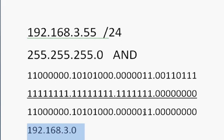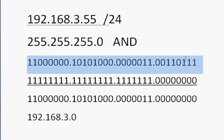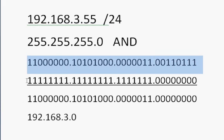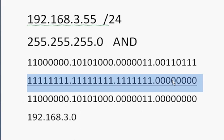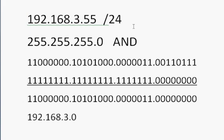In Cisco CCNA, what happens is the router takes the IP address and logically ANDs it with the subnet mask to find the network. With a /24 it's straightforward — 192.168.3 network. But things get harder when someone uses a subnet mask like /28, which becomes 255.255.255.240 — a non-obvious mask. That's where the magic number method comes in handy, which I'll cover in the next tutorial.